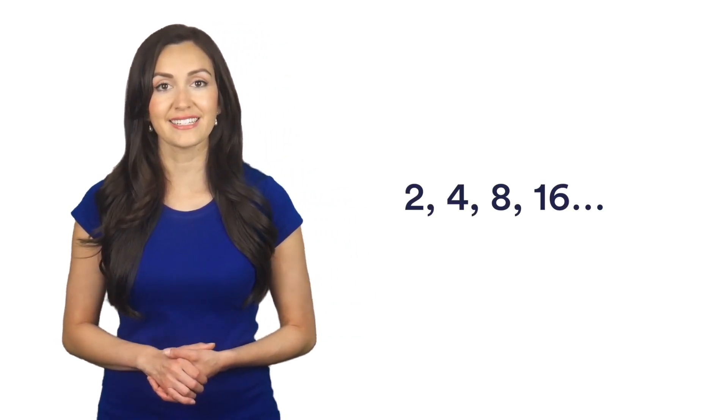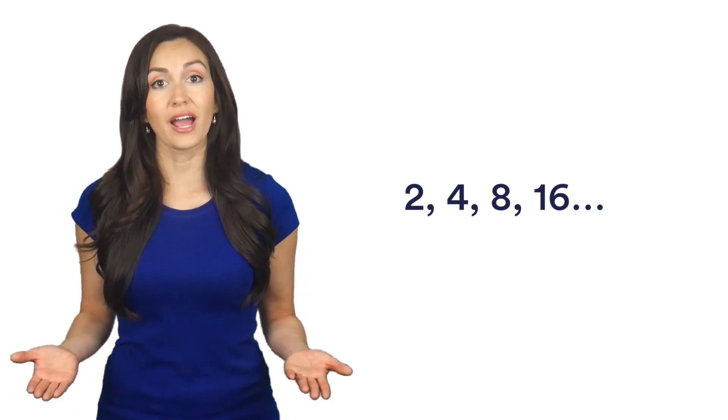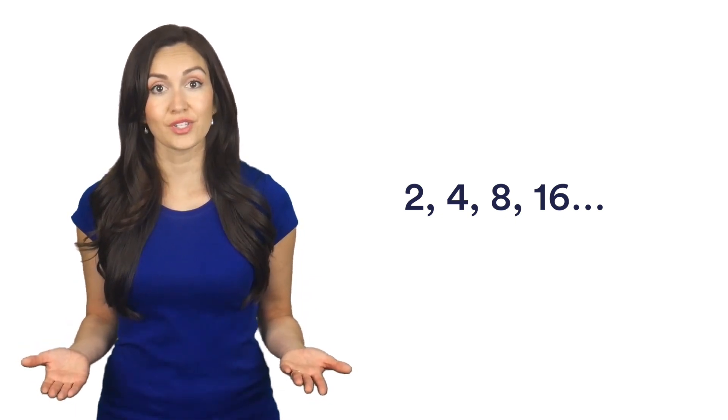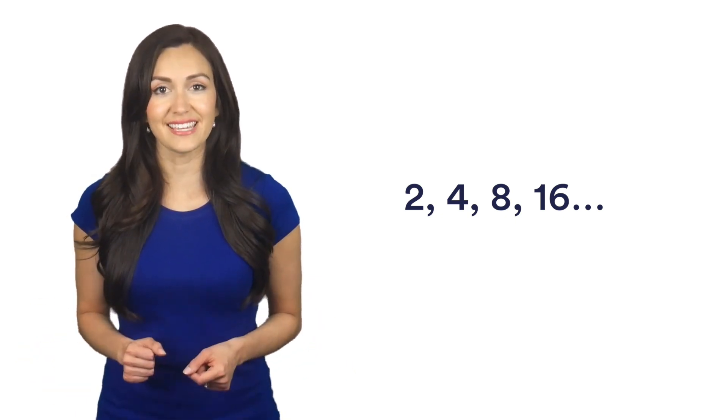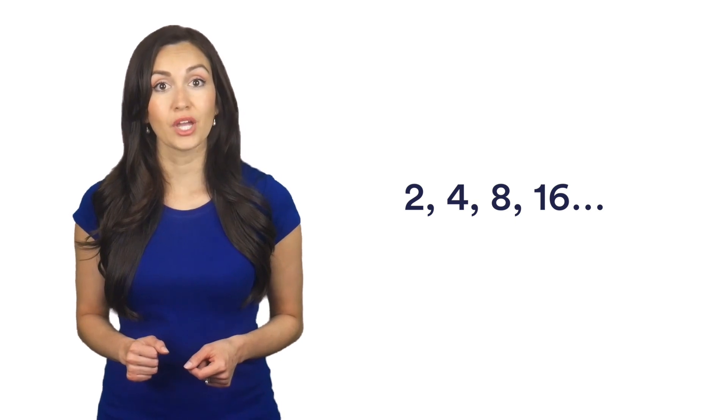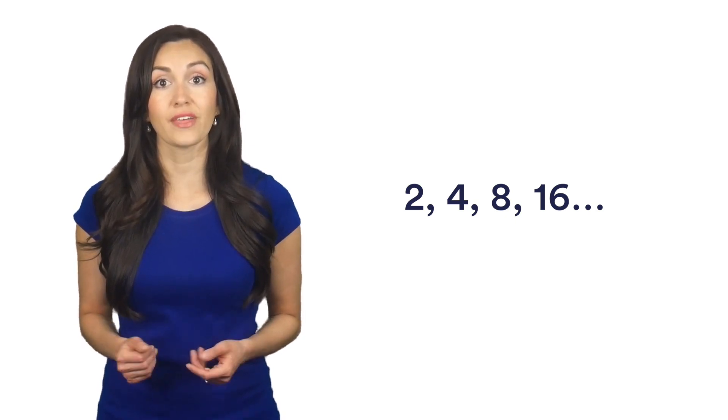Consider the string of numbers: 2, 4, 8, 16. Without having to look at the suggested answers, we can read the sequence and see that to find the next number, we just have to double the number that came before.